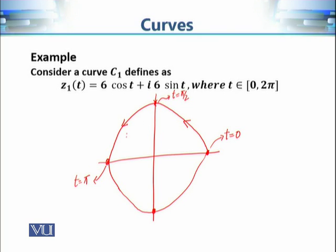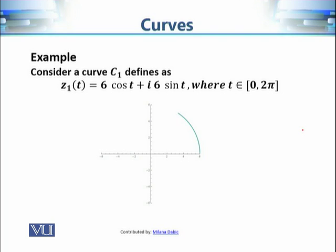A curve defined in this parametric way gives us more than just a geometrical shape. A geometrical shape is just a circle, but the parameterization also gives us the direction in which we are moving. When we start from t = 0 and increase t to 2π, we arrive back at the same point — this is the orientation of our travel along the curve.